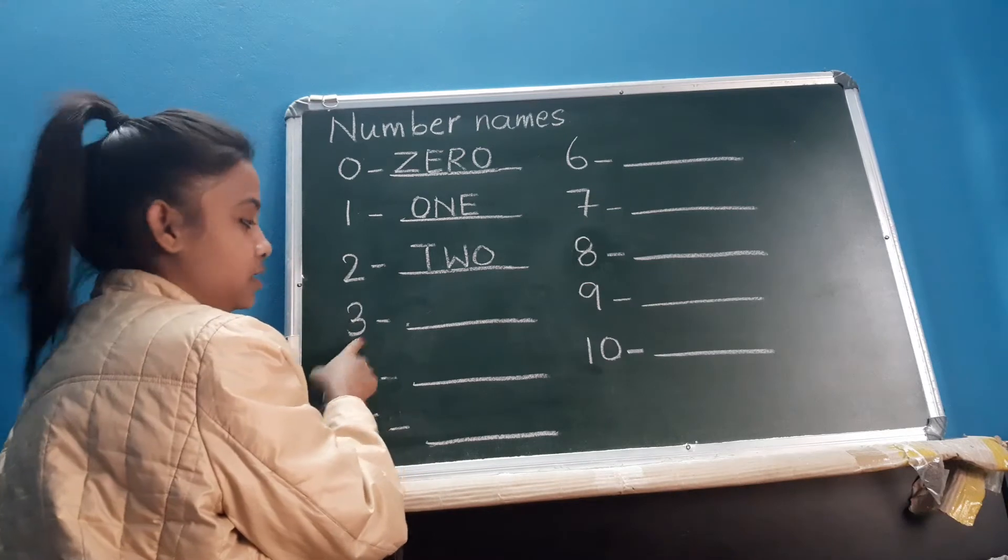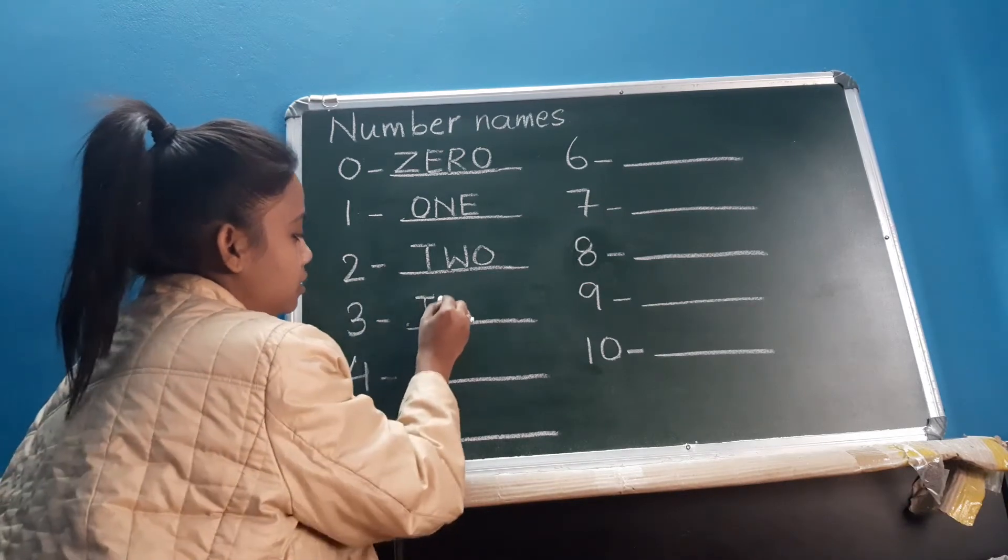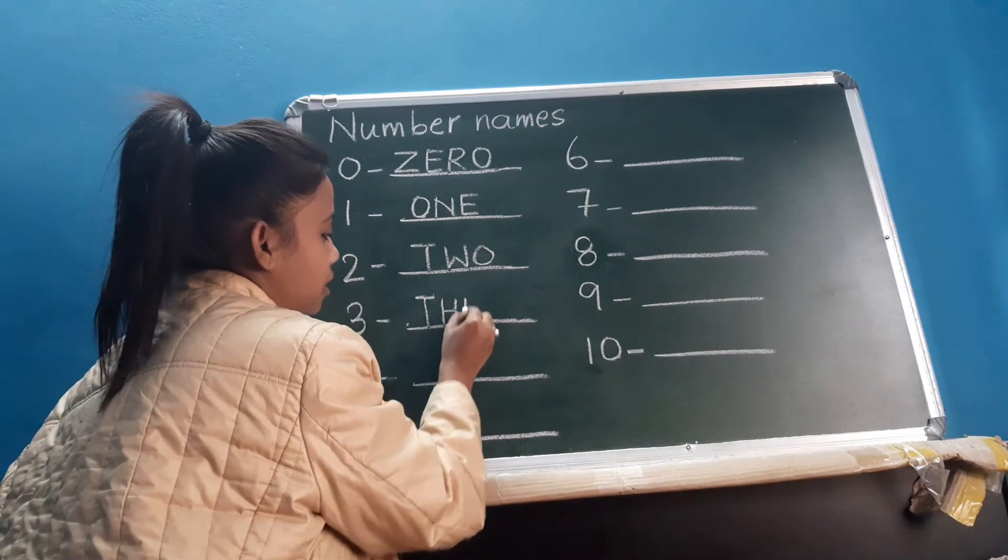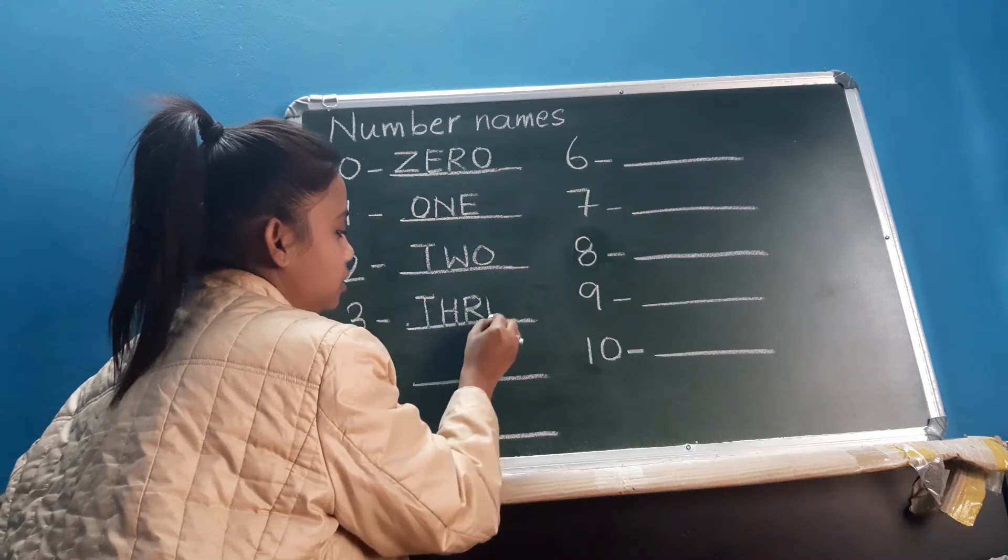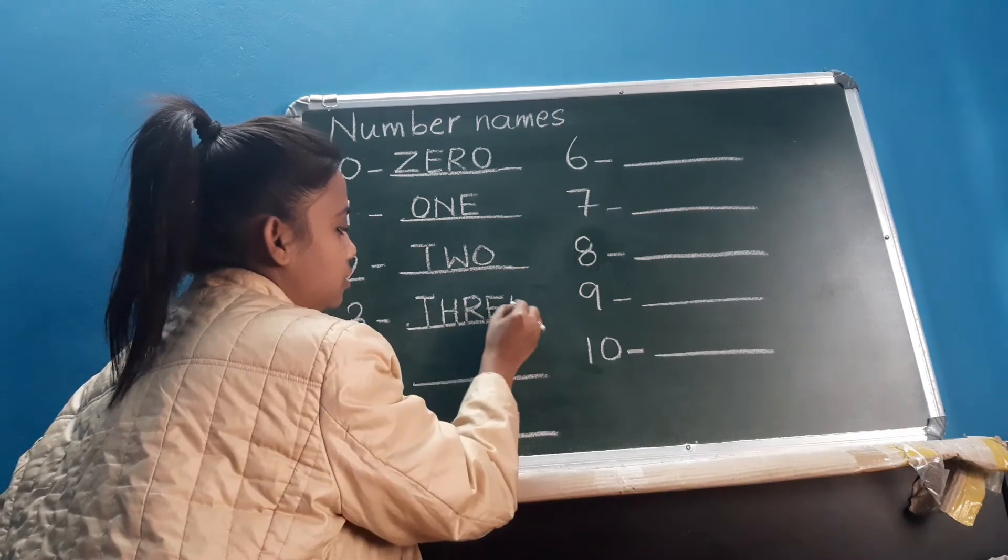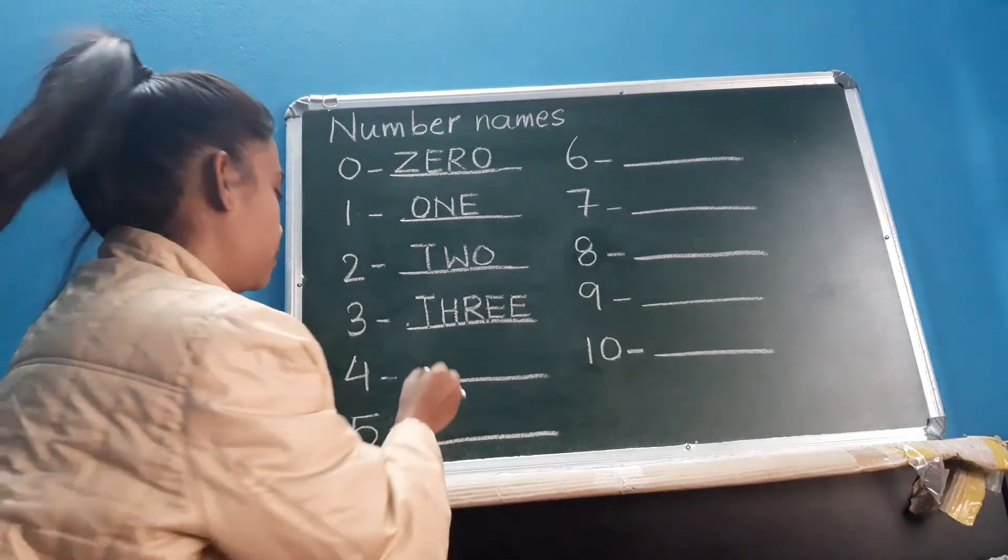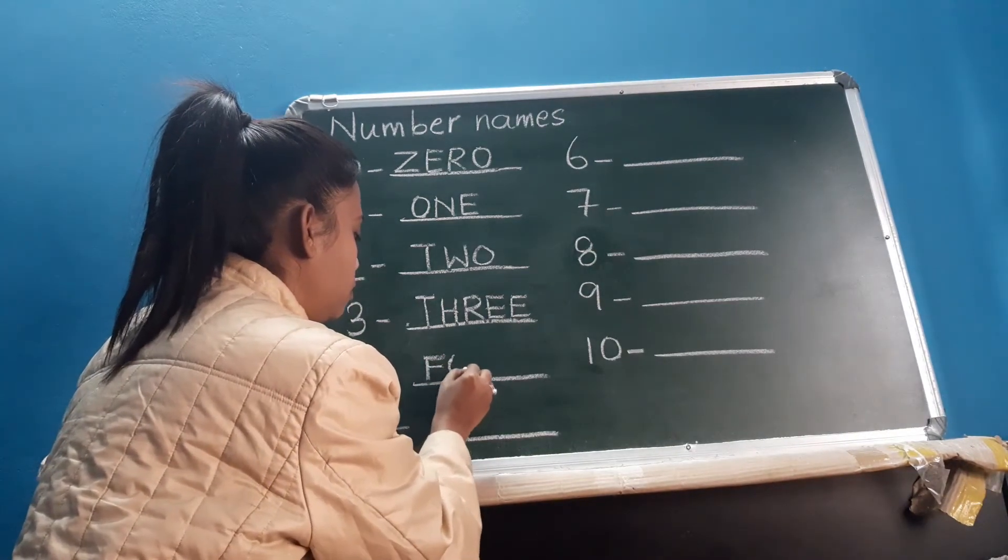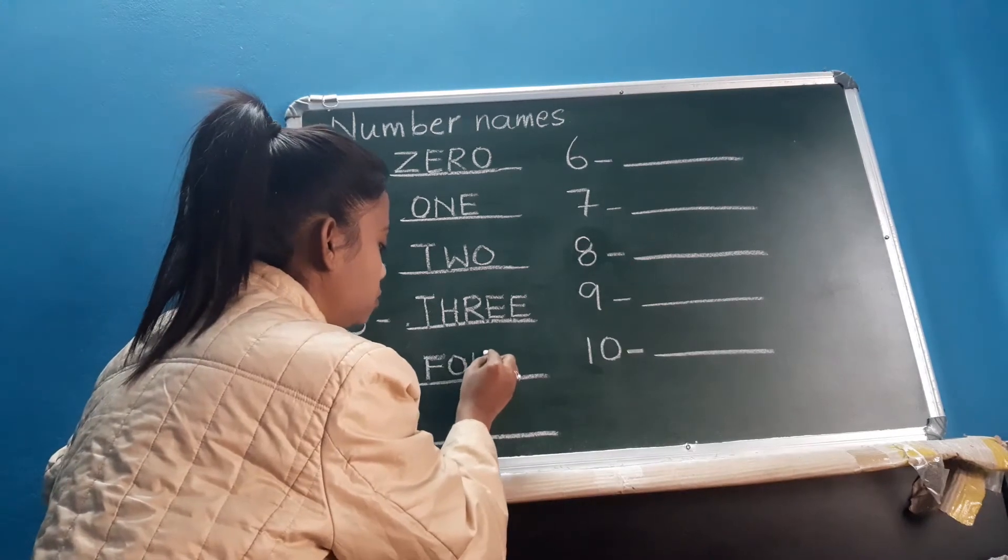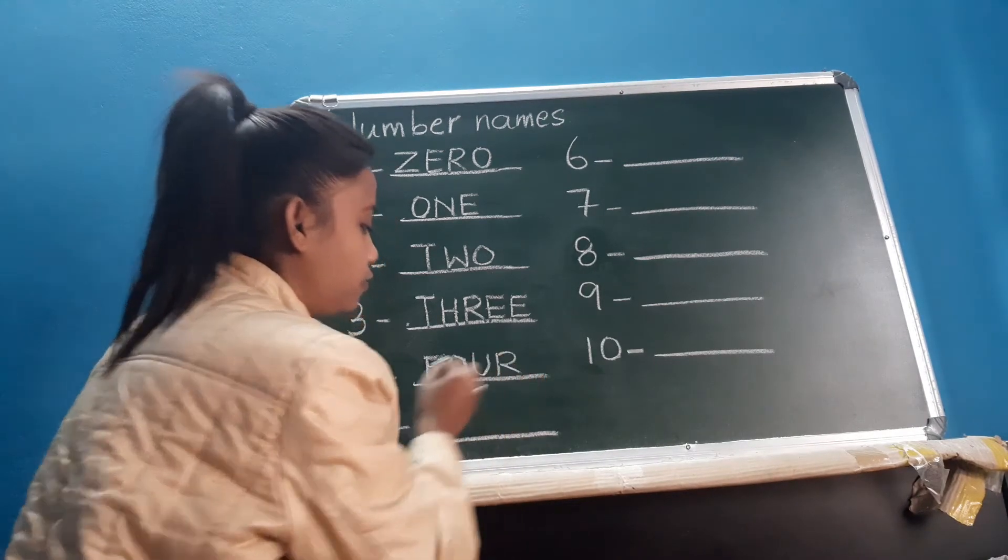Next is 3: T, H, R, E, E. Three, alright? Next is 4: F, O, U, R. Four.